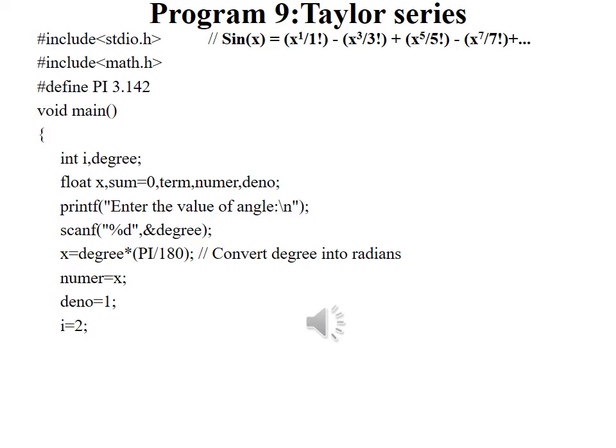So let me consider the value of degree is equal to 45. For the further calculation we will convert this degree into radians using the formula x is equal to degree into pi divided by 180. For degree 45 we will get the x value as 0.7855.